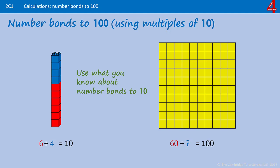And you've added on 4. So 6 and 4 is 10, 60, add what, is 100. Pause the video, have a go.